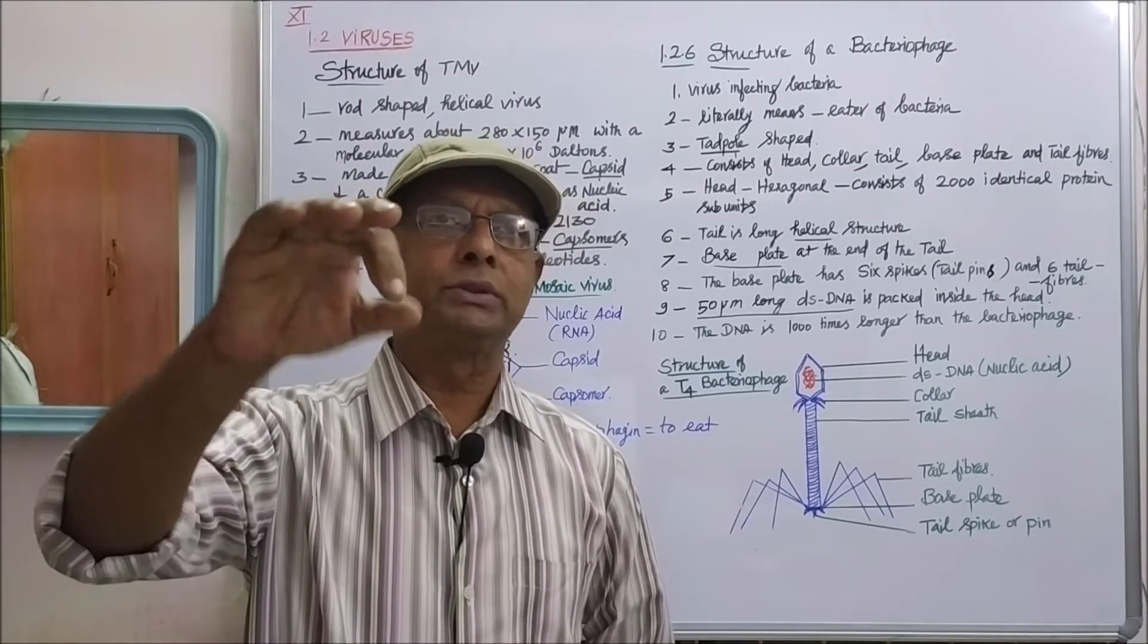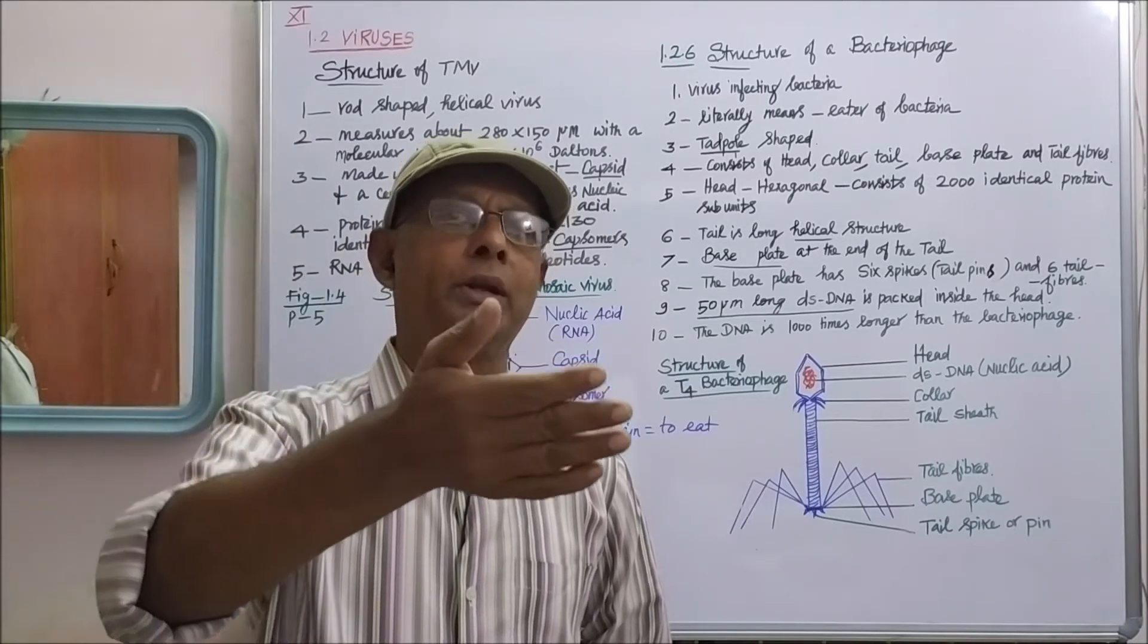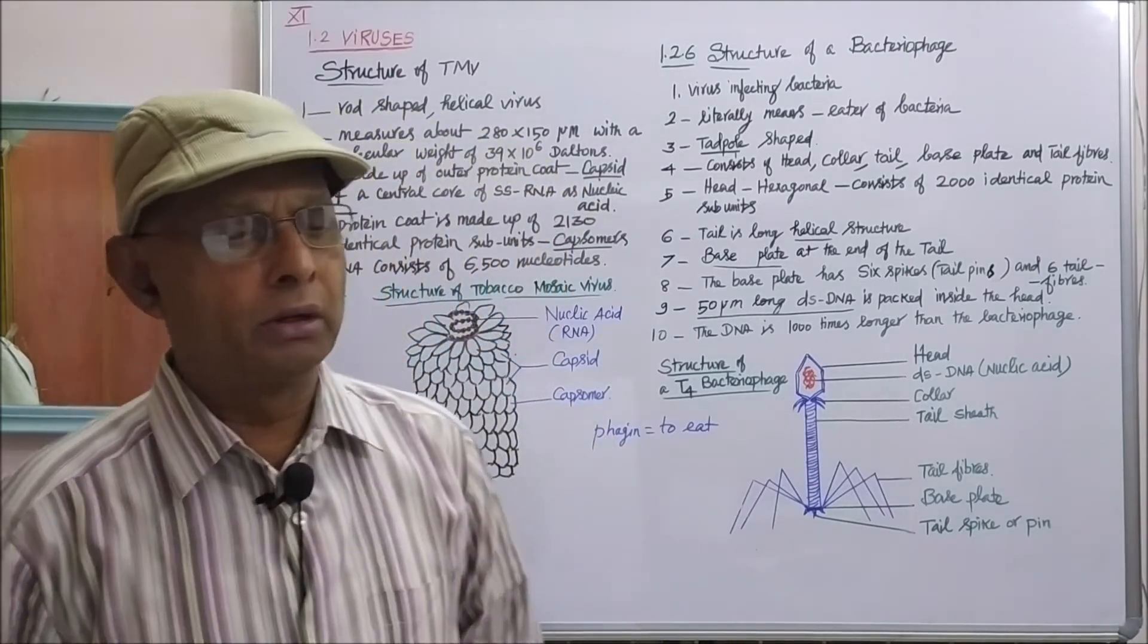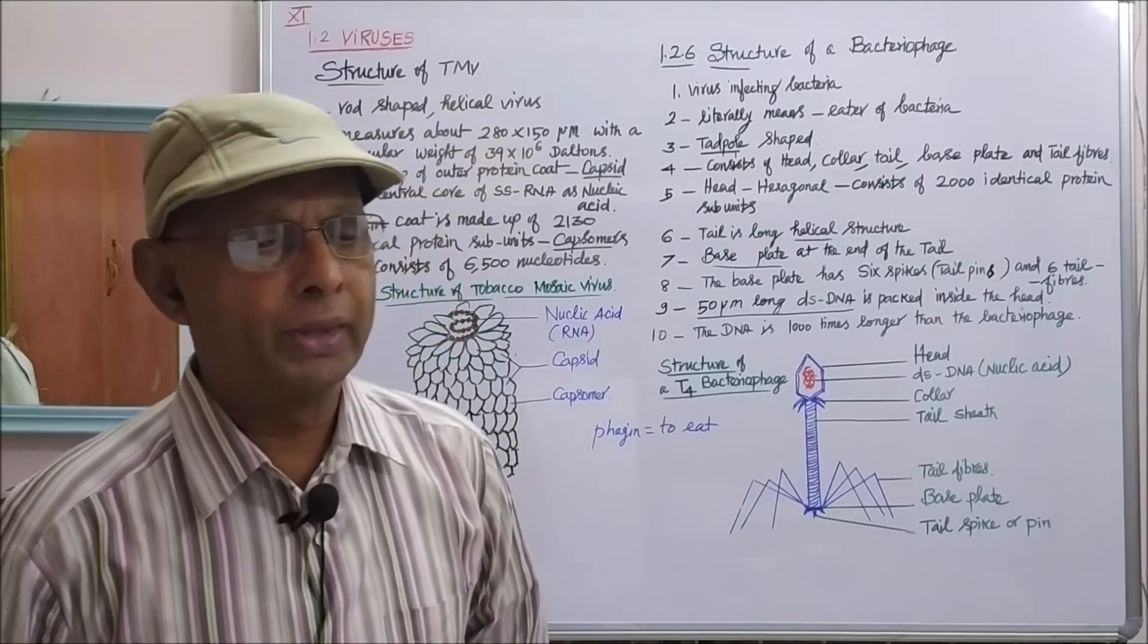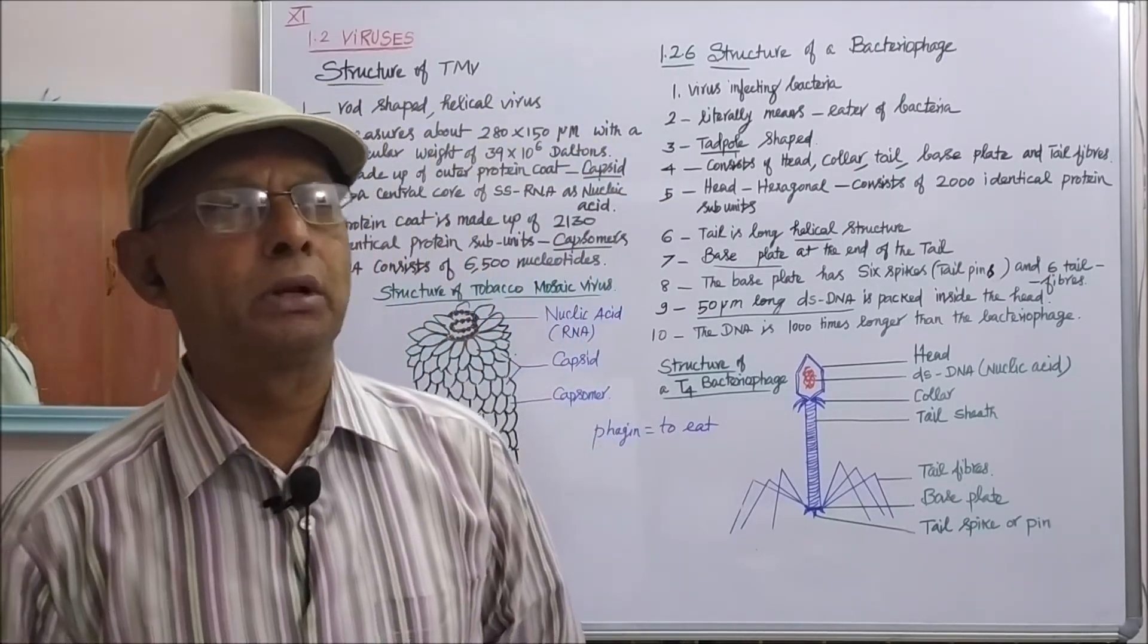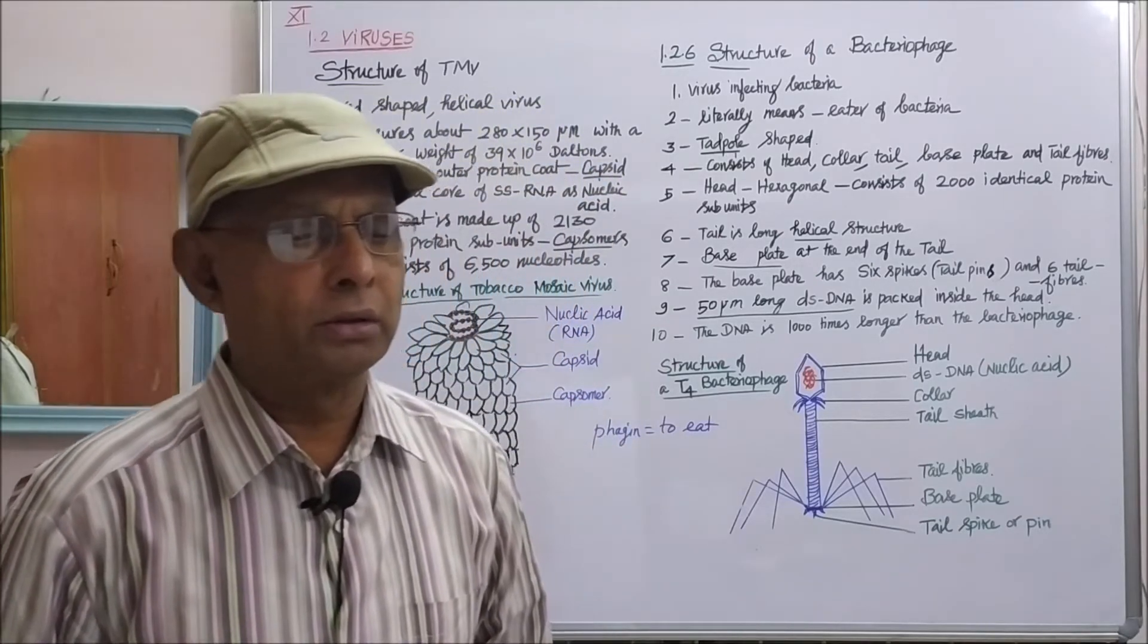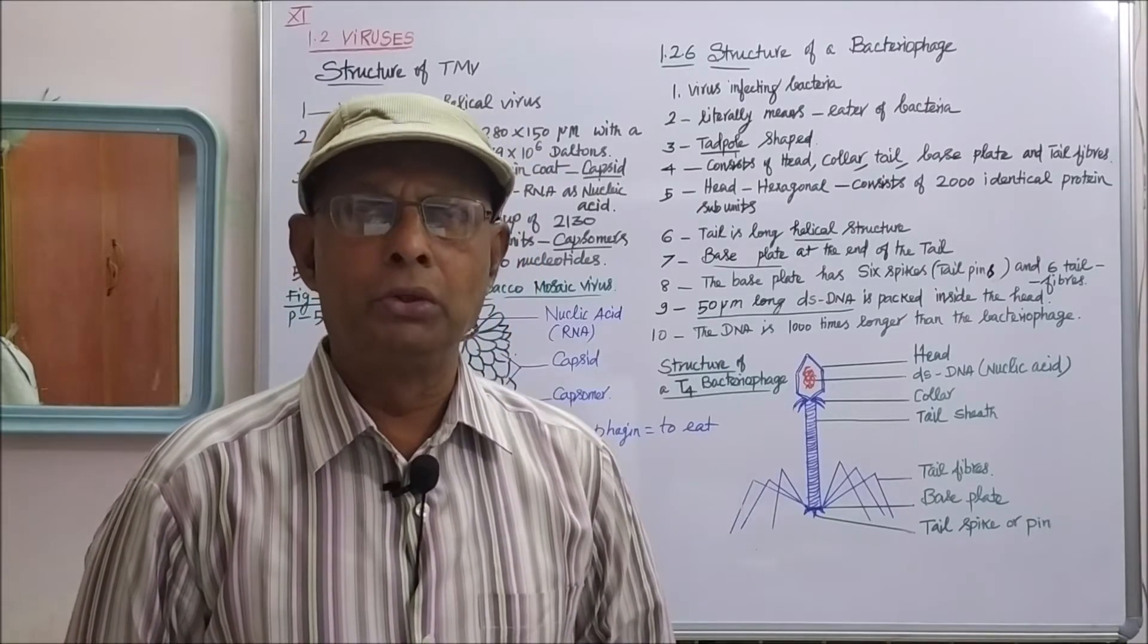Veins are part of the vascular tissue which supplies water to the leaf and takes materials away from the leaf. Along the veins, you can see discoloration or decoloration of the leaf color and yellowing.